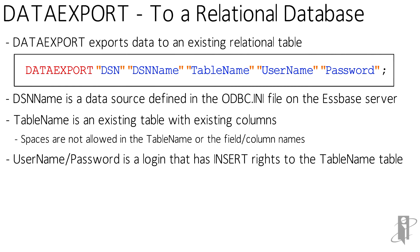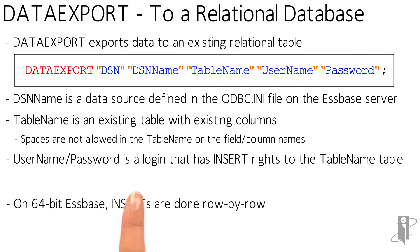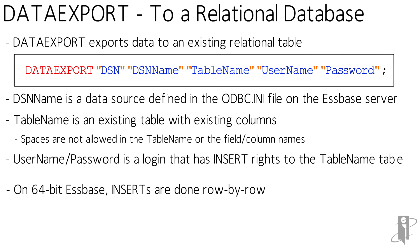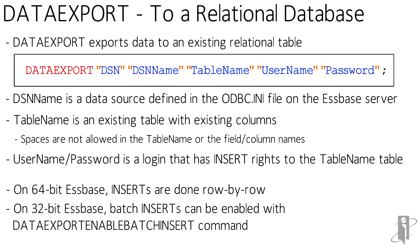The way it inserts data into that table is a little different. On 64-bit S-Space, the inserts are done row by row. On 32-bit S-Space, it does a batch insert if you tell it to. By default it'll do row by row, but you can use the data export enable batch insert command to have it insert as a large group instead of row by row. Again, this doesn't work on 64-bit S-Space.